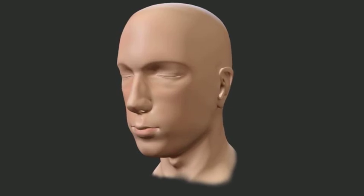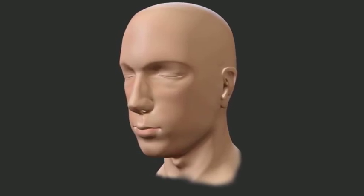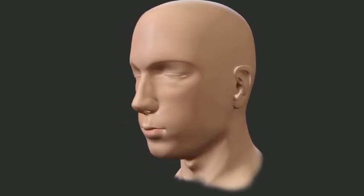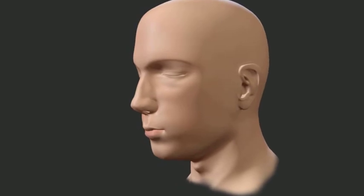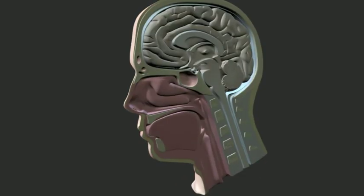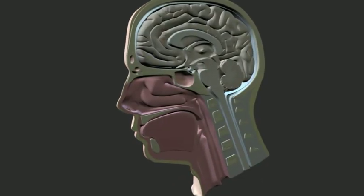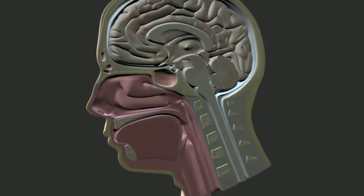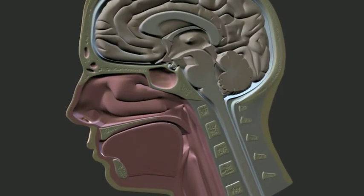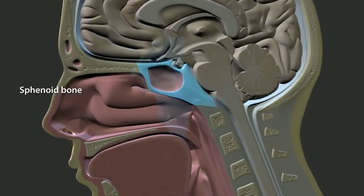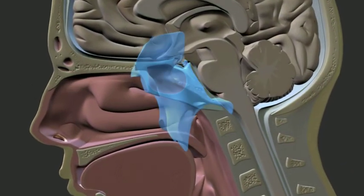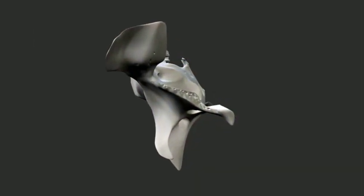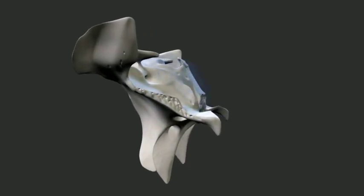The endoscopic endonasal approach to sellar tumors that extend into the cavernous sinus requires a comprehensive knowledge of relevant surgical anatomy. These tumors are approached through the lateral space of the sphenoid sinus, contained within the body of the sphenoid bone. Understanding the anatomy of the region is critical to performing safe surgery for these tumors.